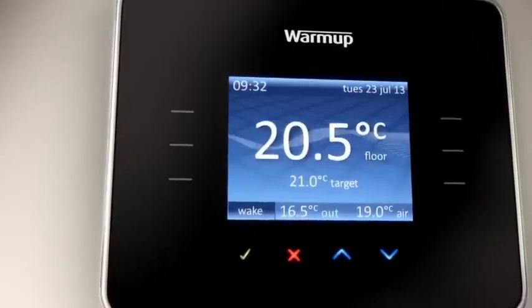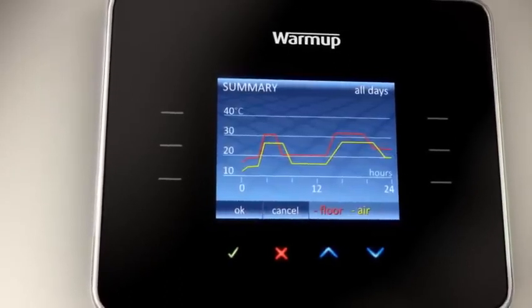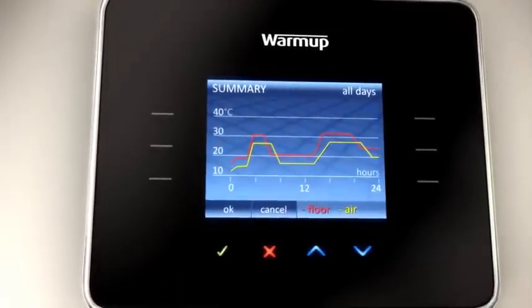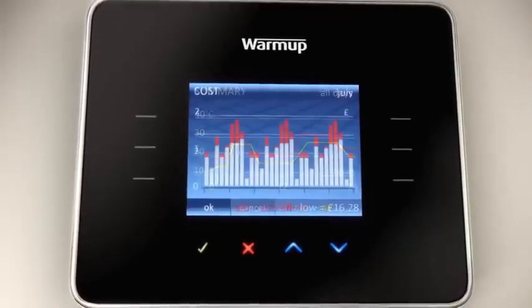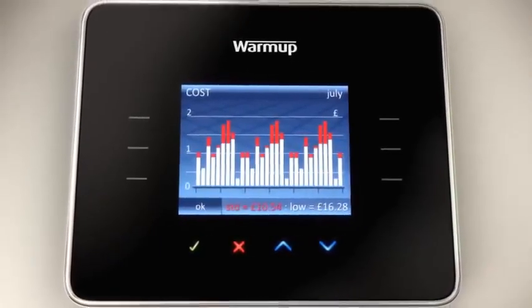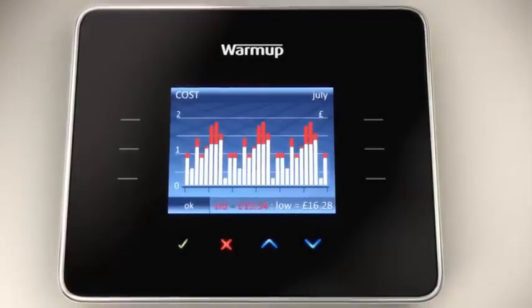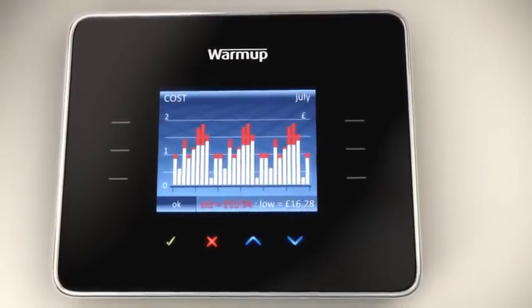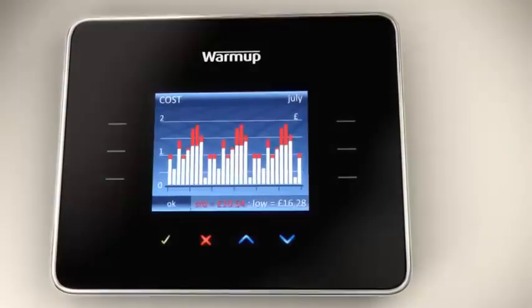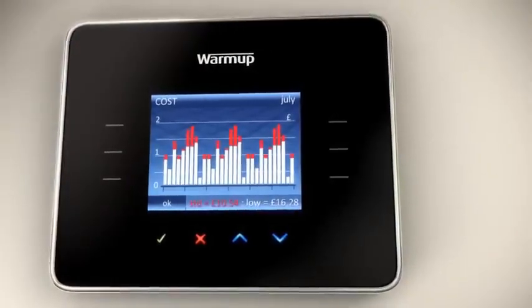The 3iE allows you to view real-time graphs of your recorded energy consumption so you know exactly what your floor heating running costs are. The active energy management feature actually prompts you to save money by reducing unnecessary energy consumption. It will help you determine the ideal temperature setting for your house.